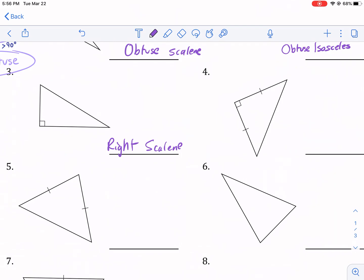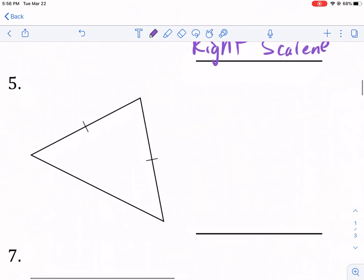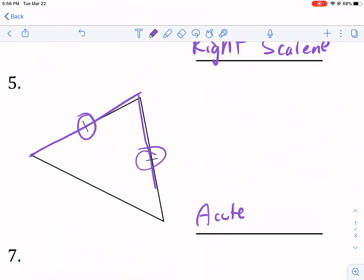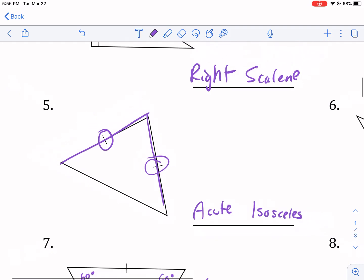Now, if we're going here and looking at a few more, we see that this one has all acute angles. And because two sides are shown to be the same, these are the same measure, it's isosceles. So this is an acute isosceles.